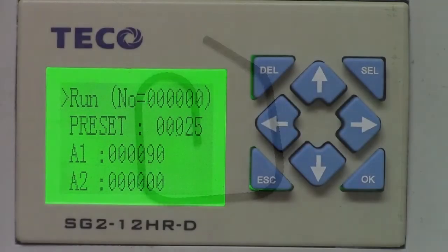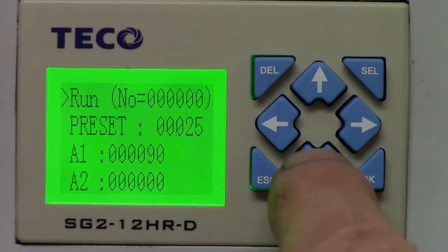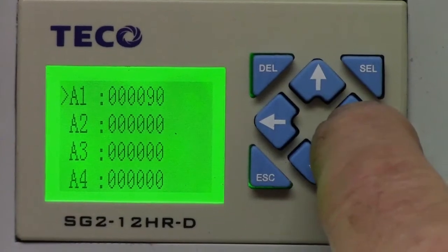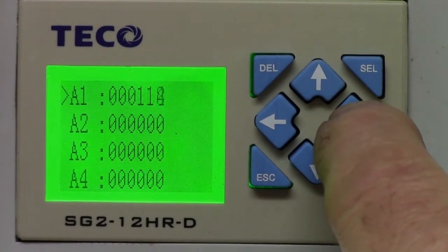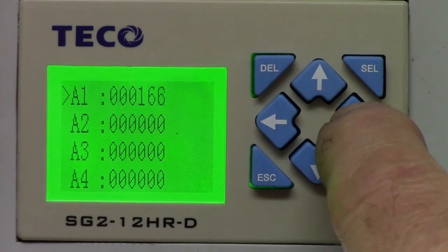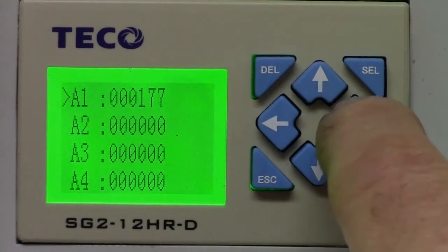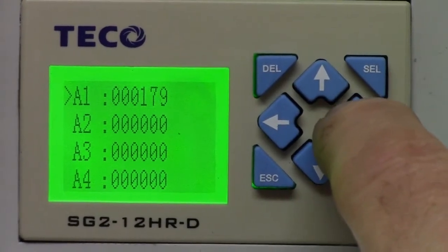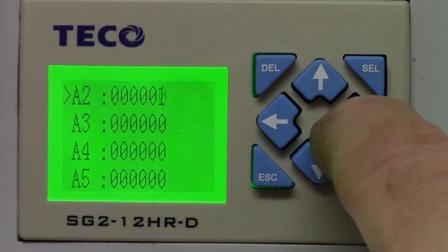Use the arrows on the controller to put 180 in A1, 90 in A2.